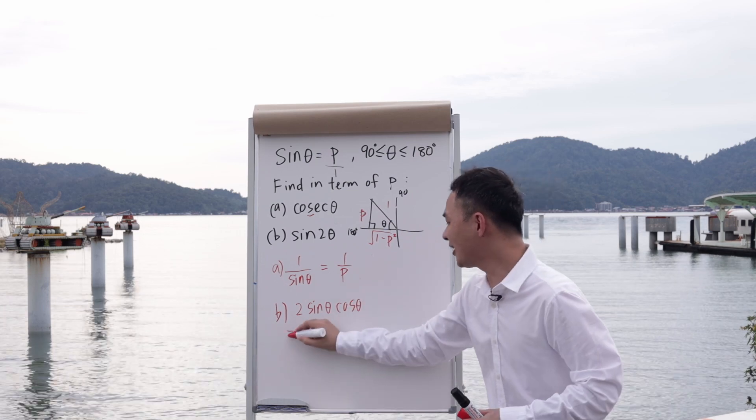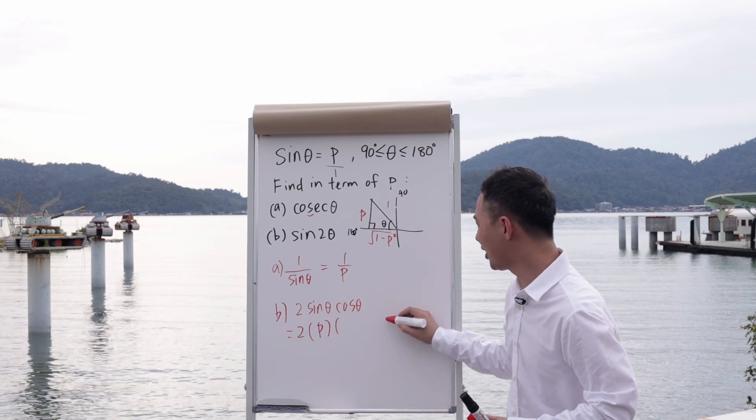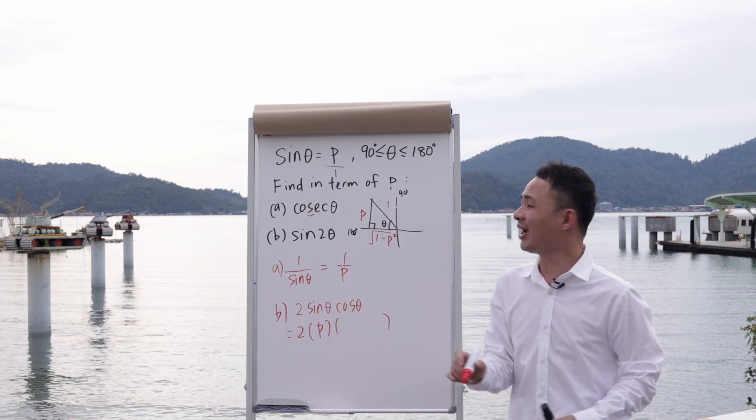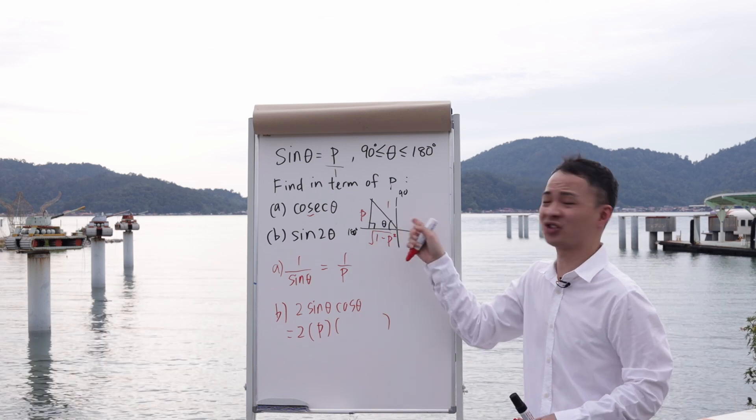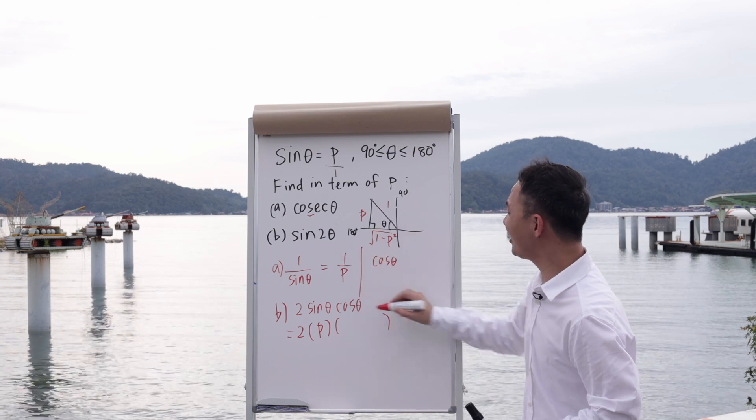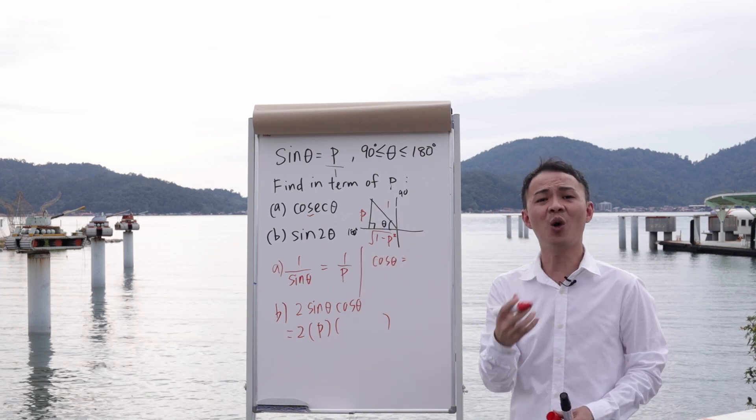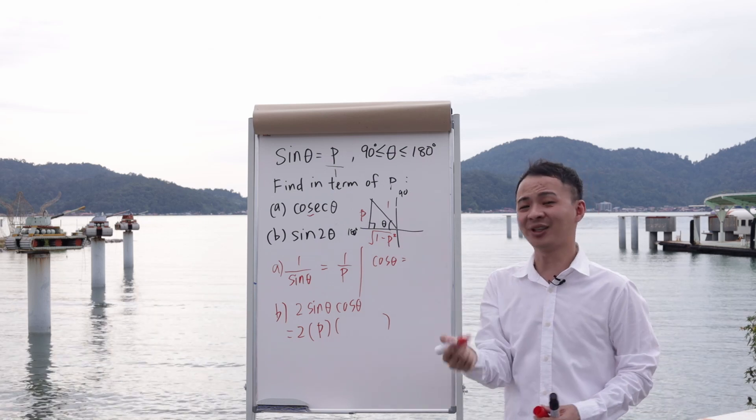Next, I need to find cos θ. Sin θ is p—that's easy. But I don't know what cos θ is. This is why when you solve the triangle, you can easily find sin, cos, and tangent from the triangle itself. To find cos θ, it should be quite easy. Cos is adjacent over hypotenuse. My adjacent is √(1-p²) and my hypotenuse is 1.